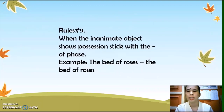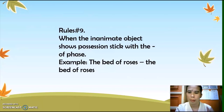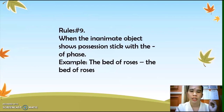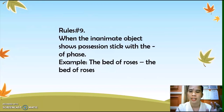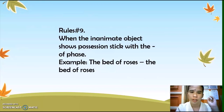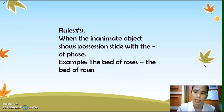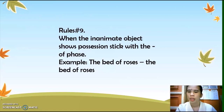Rule number nine: when an inanimate object shows possession, stick with the 'of' phrase. For example, 'the bed of roses' — the sentence doesn't need to change; you stick with the 'of' phrase. Another example: 'the face of the clock' — it goes with 'the face of the clock.' Nothing changes. Stick with the 'of' phrase.